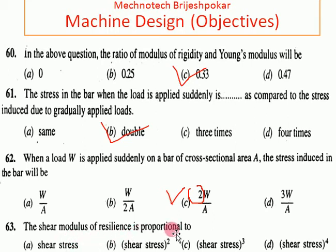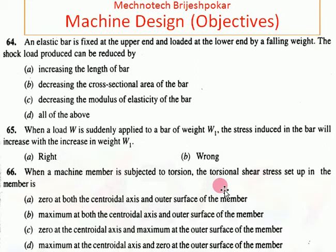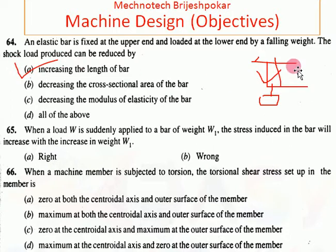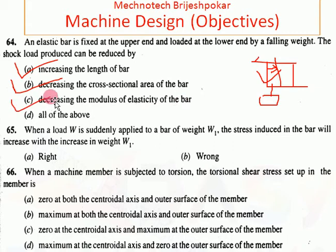The modulus of resilience in shear is proportional to the square of shear stress — question 63 answer is B. For question 64: an elastic bar is fixed at the upper end and loaded at the lower end by a falling weight. The shock load can be reduced by increasing the length of the bar, decreasing the cross-sectional area of the bar, or decreasing the modulus of elasticity. The answer is D — all of the above.